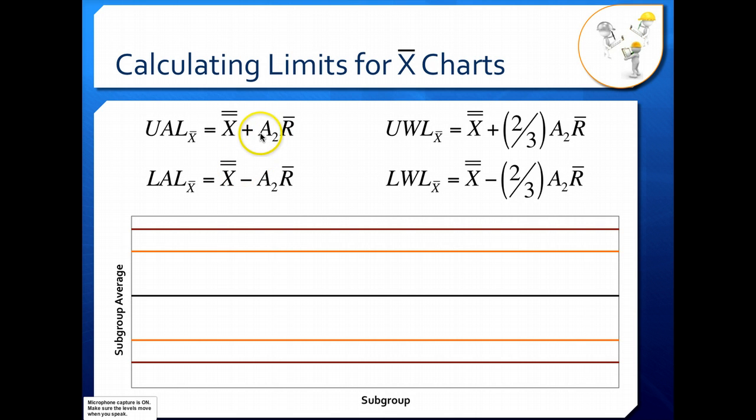So here, we have this constant A2. A2 is in Appendix B in your book. It's just a constant and it depends on the subgroup size. So it's going to change with your subgroup size. If you have a subgroup of 2, for example, your A2, that constant will be a different value than if you had a subgroup size of 5. So keep in mind that when you're looking up your values in Appendix B.